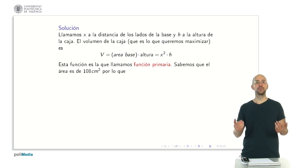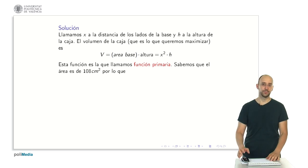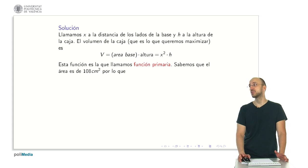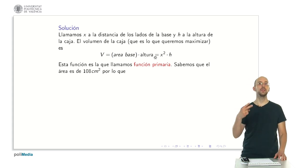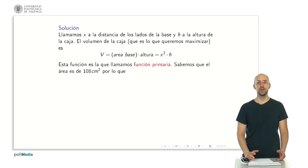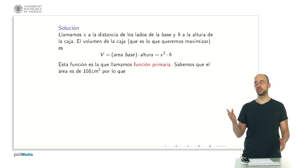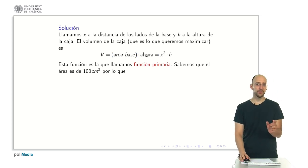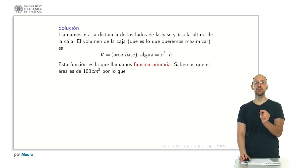Now let's turn to the secondary equation — one that elucidates the relationship between the variables. We need it because this volume function depends on two variables, x and h, and we don't yet know how to calculate maxima and minima for functions of several variables. You will acquire those techniques in the first years of your degree. For now, we can only maximize functions with a single variable, so we need to eliminate one variable.